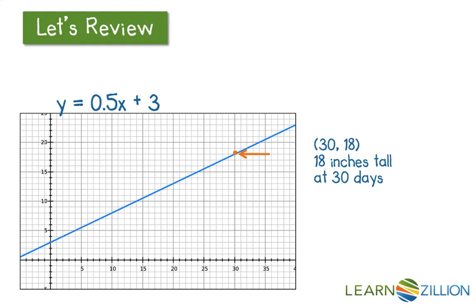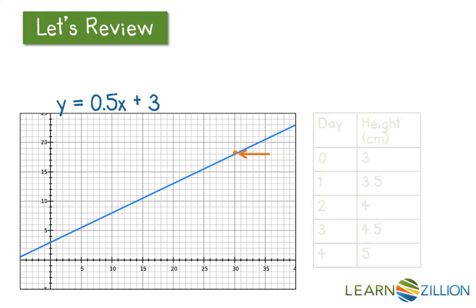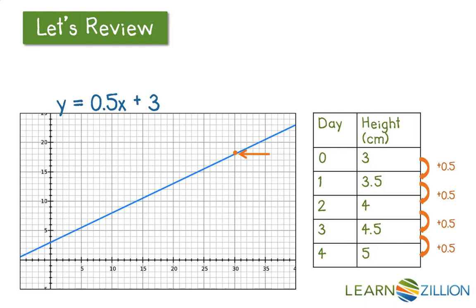And a point over here would show that, let's say that my graph is showing the height of my plant over a certain number of days. So this point here, 30, 18, shows that my plant would be 18 inches tall at 30 days. And I can show that in a table of values where I'm increasing by 0.5 every single day.